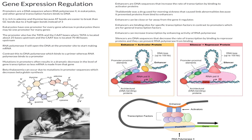An example of something that happened due to issues with enhancers is the drug thalidomide. Thalidomide was a drug used for morning sickness in pregnant women and it caused severe birth defects. The babies had limb abnormalities, and we eventually found out that the thalidomide drug prevented proteins from binding properly to certain enhancers, which caused these limb abnormalities.